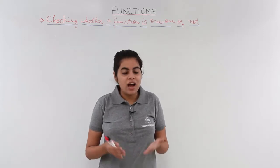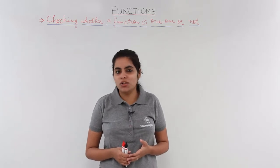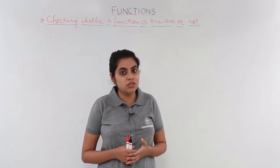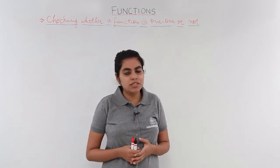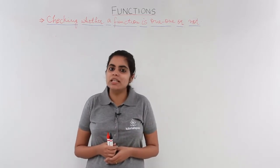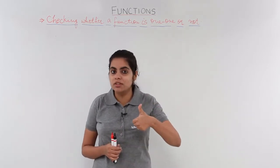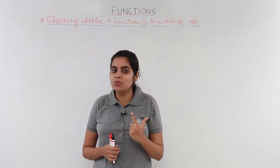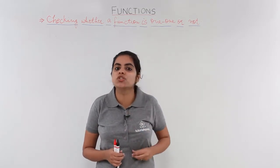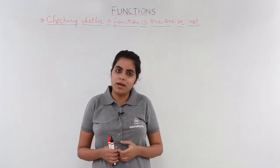In this video, we'll see how to check whether a given function is one-one or not. We know by the knowledge of the types of functions what a one-one function is, but what if I have some questions given — how would I check whether the function is one-one or not? Basically there are three ways to check: one, if the graph is given; second, if I want to use calculus (that is differentiation); and third, when I want to use the definition of functions.